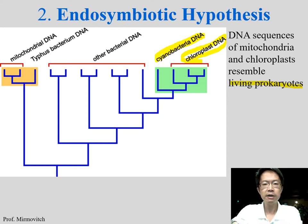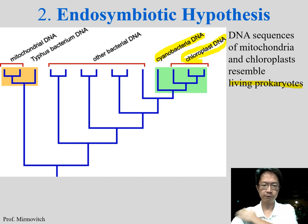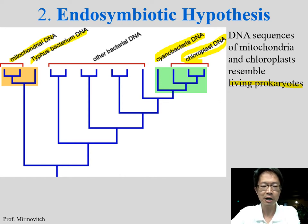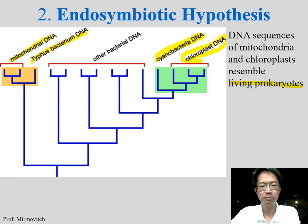Cyanobacteria are prokaryotic unicellular organisms, similar to amoeba and paramecium, but they can perform photosynthesis. Mitochondrial DNA is similar to something called typhus bacterium. So that's today's lecture — very short. The take-home message is how the modern cell evolved from the primitive cell, how eukaryotic cells evolved from prokaryotic cells, and how eukaryotic cells got all their organelles.